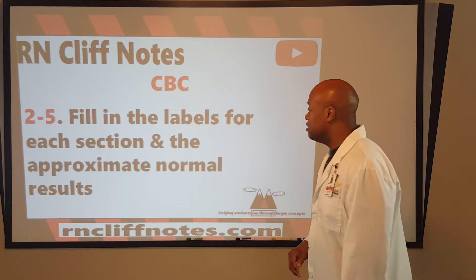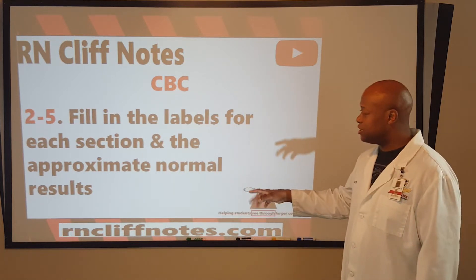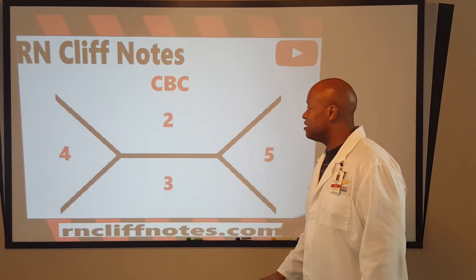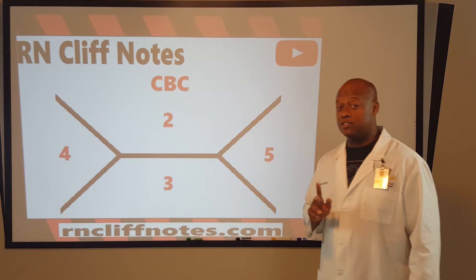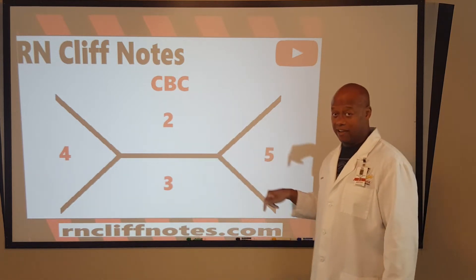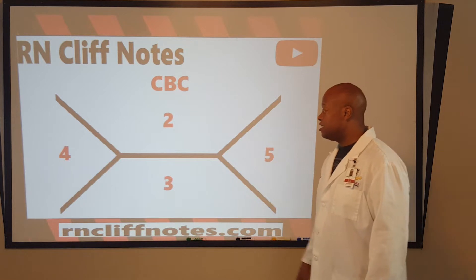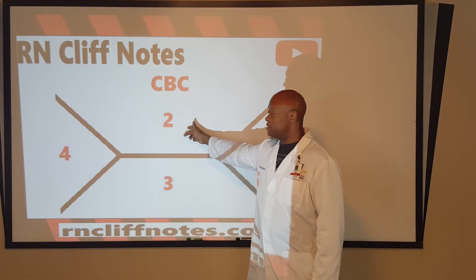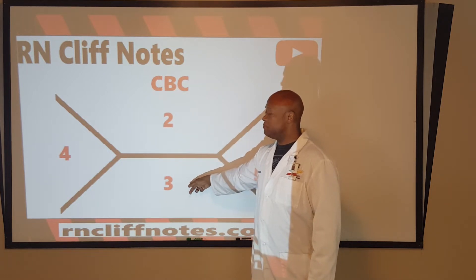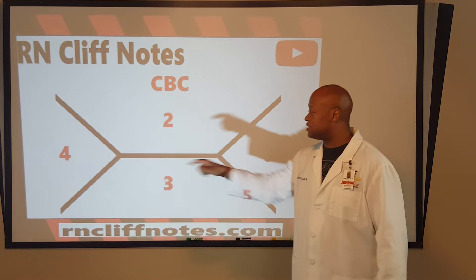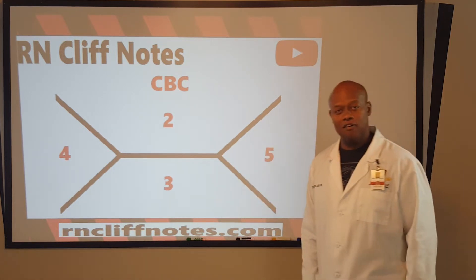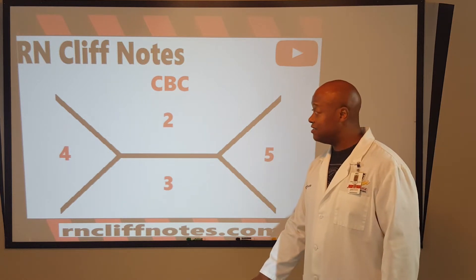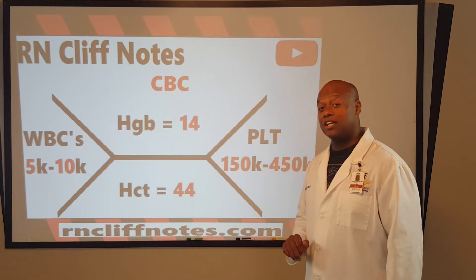Two through five: fill in the labels for each section and approximate number results. Number one was actually drawing that diagram without any help. Number two: putting in the label and the approximate number. Three: label and number. Four: label and number. Five: what goes there? That's how we arranged it. And it should look like that.